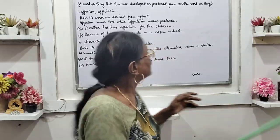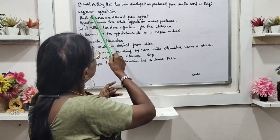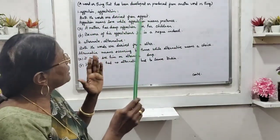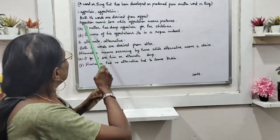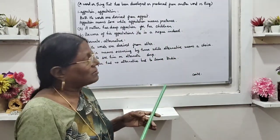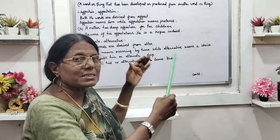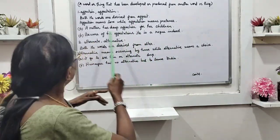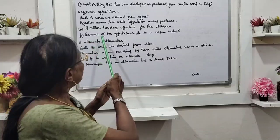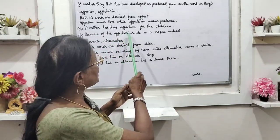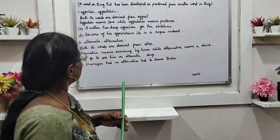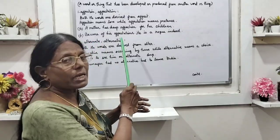Shall we start with number one: affection and affectation. Both words are derived from the word 'affect.' Affection means love, while affectation means pretense. For example: 'A mother has deep affection for her children.' And: 'Beware of his affectations — he is a rogue indeed.'